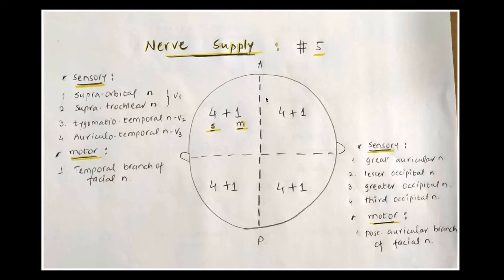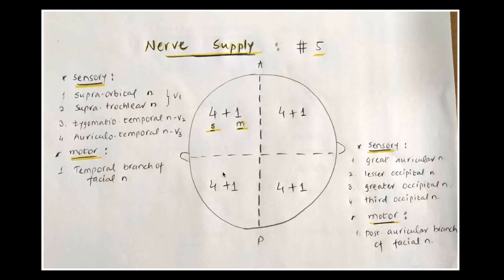Next is nerve supply; again the rule of five applies. In a superior view with anterior and posterior aspects divided into four quadrants, each quadrant — right and left, anterior and posterior — has five nerves. Of those five nerves, four are sensory and one is motor, making a total of 20 nerves supplying the scalp.